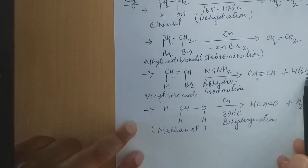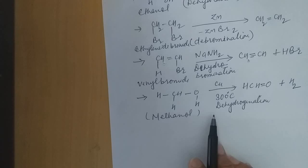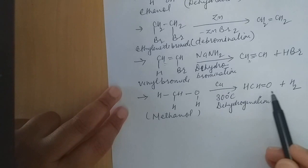If you look at methanol — methanol in the presence of copper at 300 degrees centigrade — then we have dehydrogenation. The H2 molecule is removed here, and formaldehyde (HCH=O) is formed. After elimination of H2, this is the product which is formed.